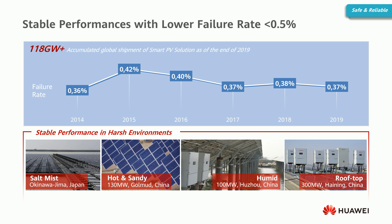Our inverters are performing all around the world in different regions and environments — for example, in salt mist ocean conditions in Japan, in hot and sandy desert conditions in mainland China, and on rooftops with high temperatures. This is demonstrated by our stable performance and low failure rate of less than 0.5%, applicable to all inverters shipped worldwide, which totaled 118 gigawatts as of the end of 2019.